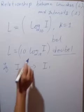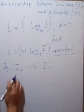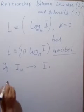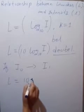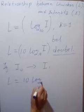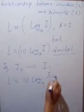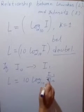Then this you can write down or L. Loudness L can be written as 10 into log of base 10 I1 divided by I0. This is the formula.